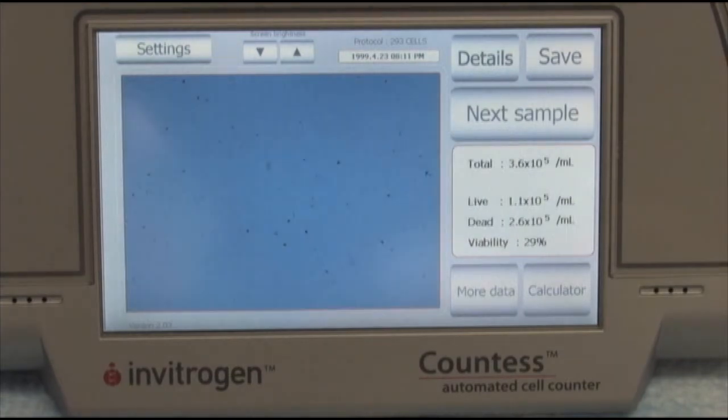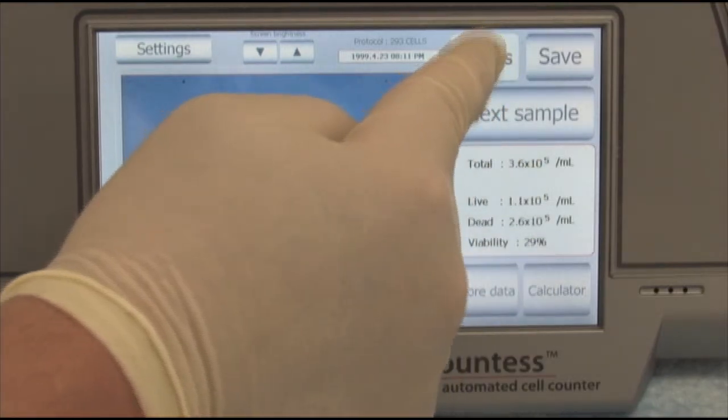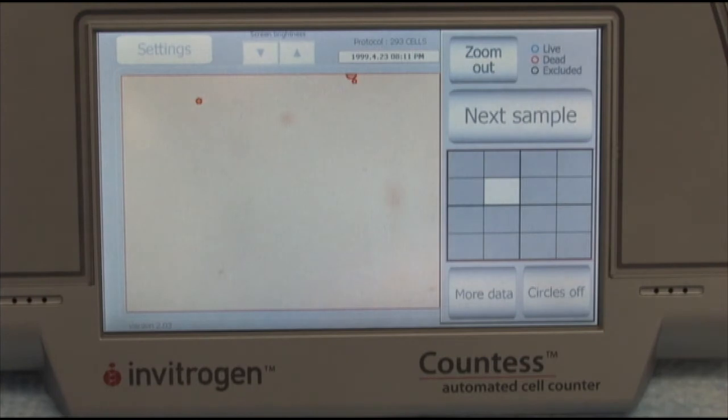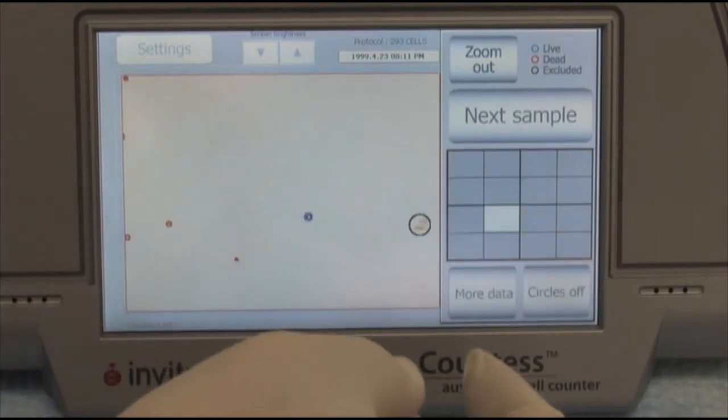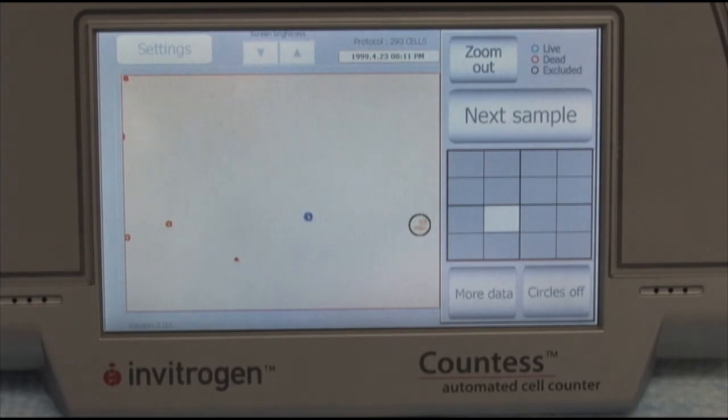After the cell counting is completed, I can hit details, can scroll around and find it's circling cells that are viable and that are dead.